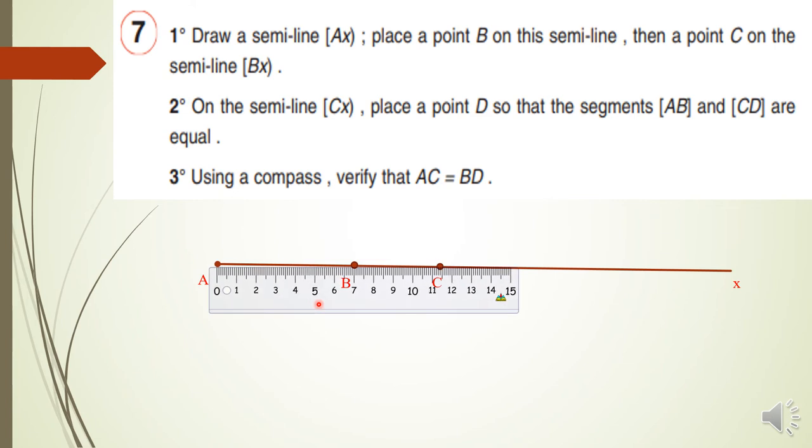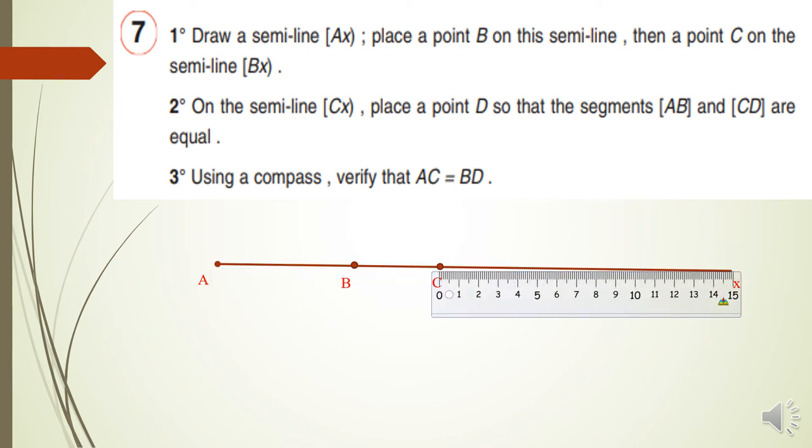We have to put the ruler. I will measure AB equal, for example, 7 centimeters. Then I will put CD equal also 7 centimeters. Here is the point D.